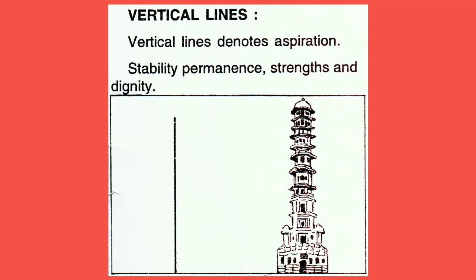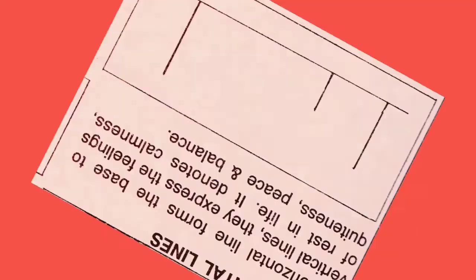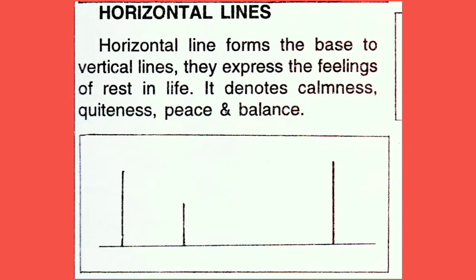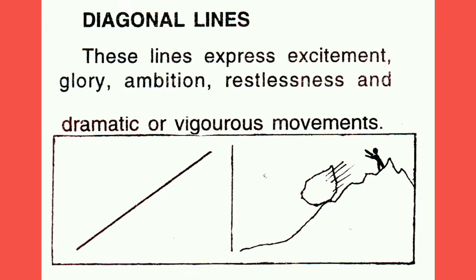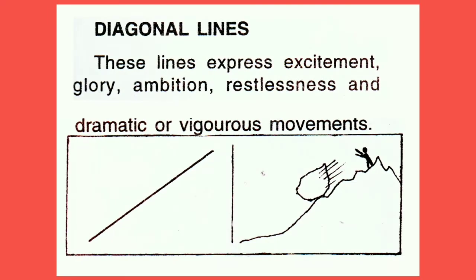Next is vertical line. Vertical line denotes aspiration, stability, performance, strength and dignity. Whereas a horizontal line expresses the feeling of rest in life — it denotes calmness, quietness, peace and balance. And diagonal line expresses excitement, glory, ambitiousness, restlessness and the dramatic.